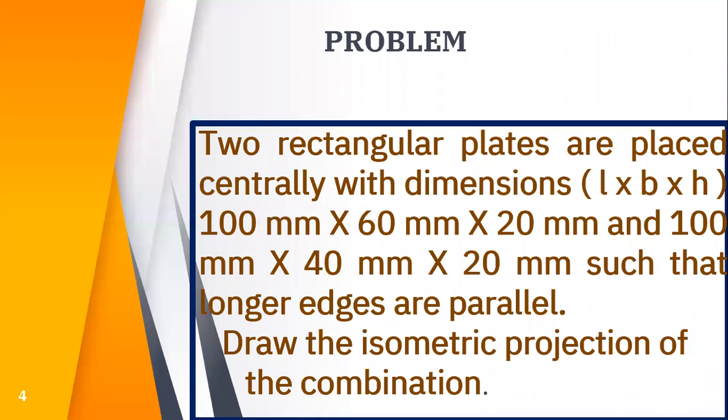Two rectangular plates are placed centrally with dimensions 100 by 60 by 20 mm and 100 by 40 by 20 mm such that longer edges are parallel. Draw the isometric projection of the combination.